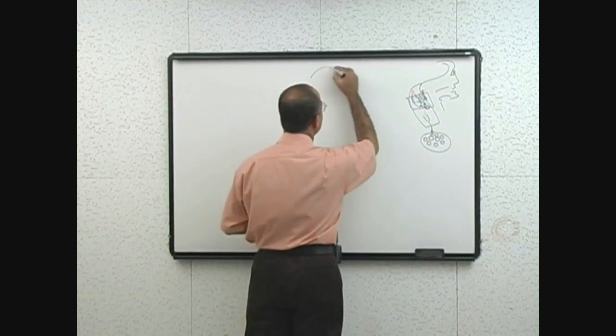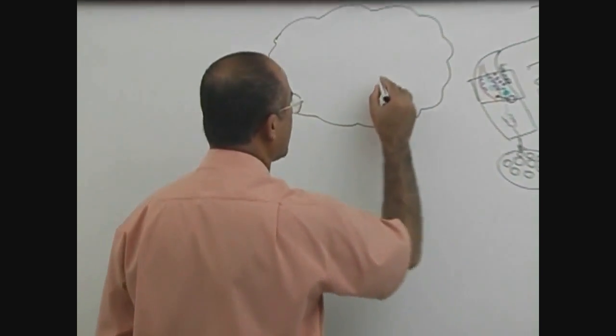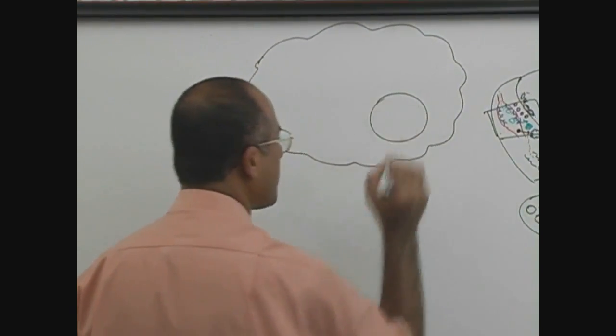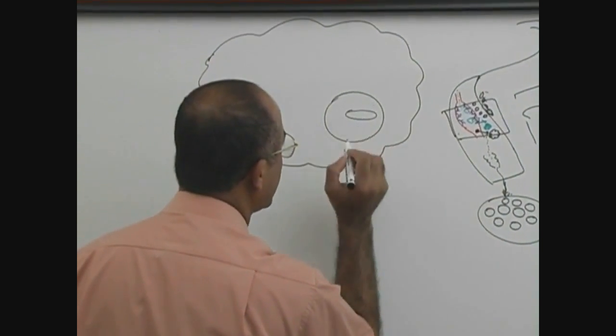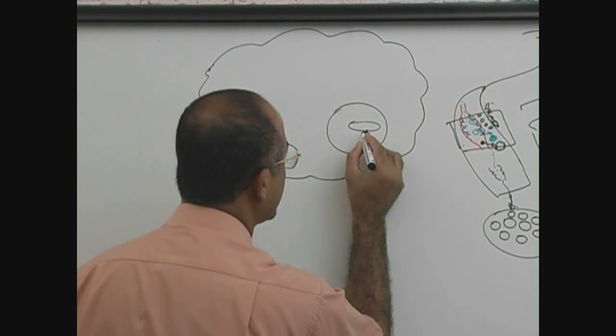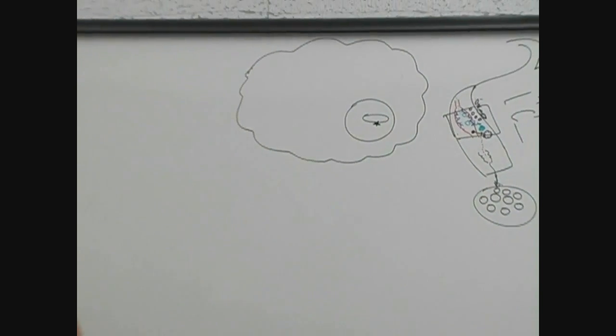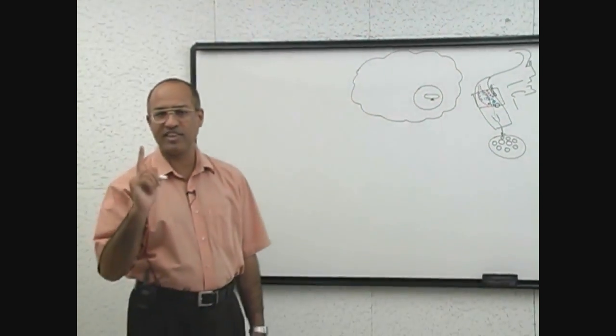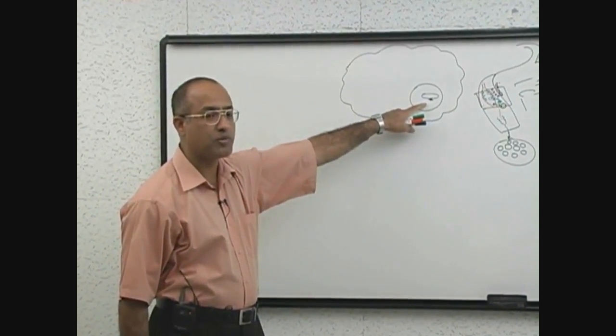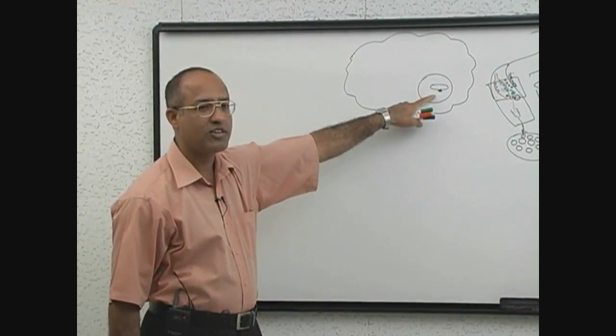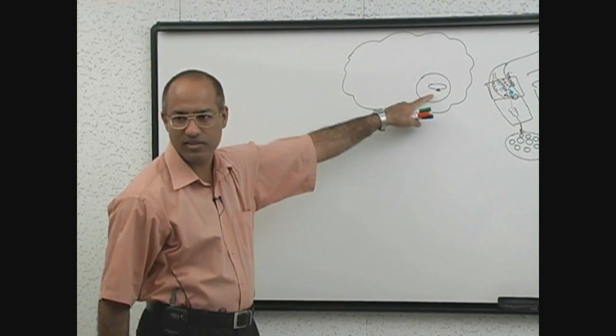Let us draw one macrophage here which has engulfed this bacterium. Suppose this is a phagosome and this is the bacteria and of course these are bacterial antigen. Again bacteria has many antigens but right now we will talk about immune response against single antigen.